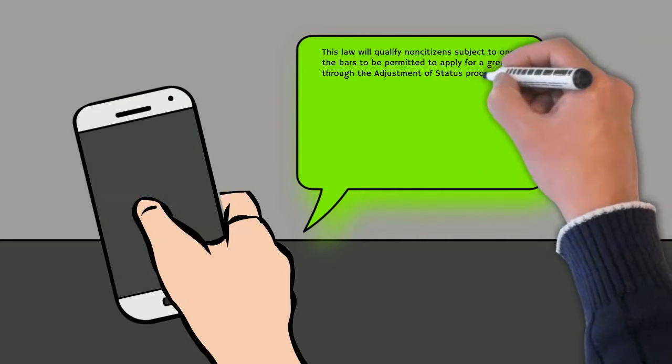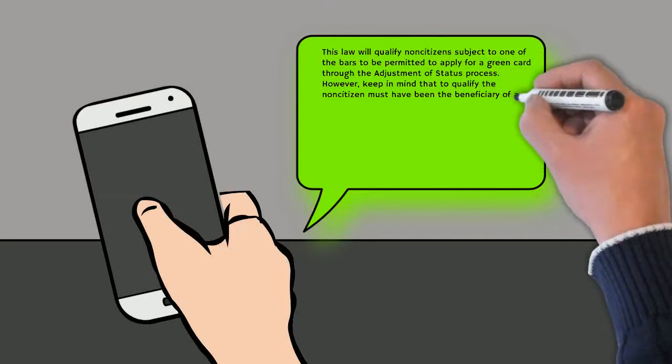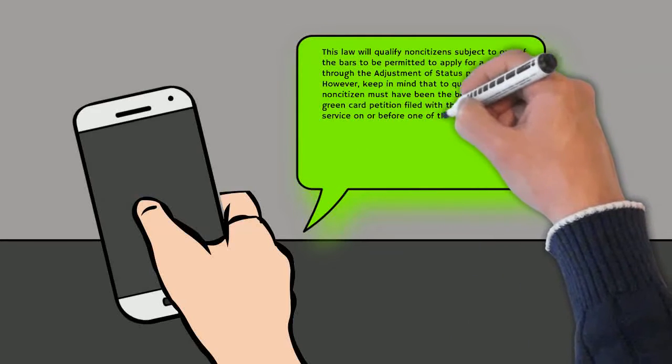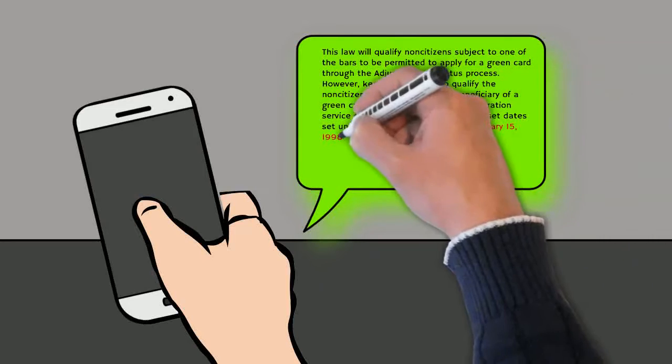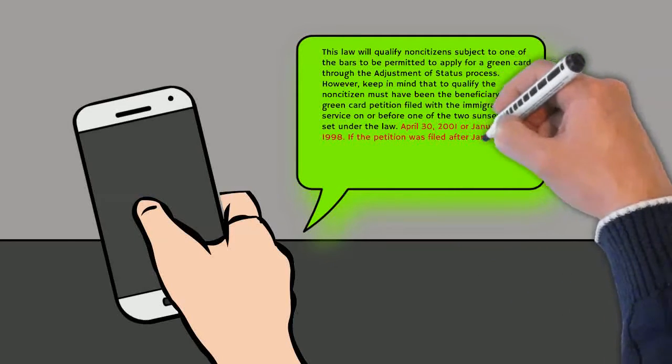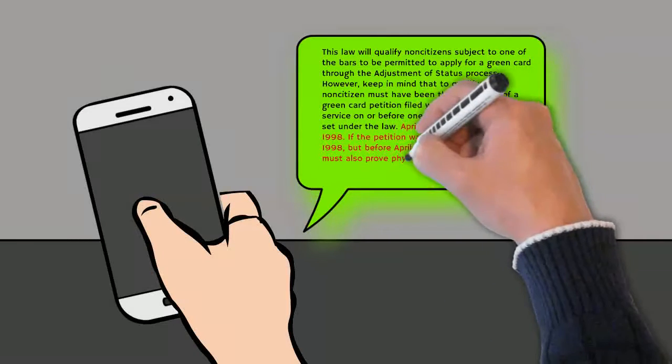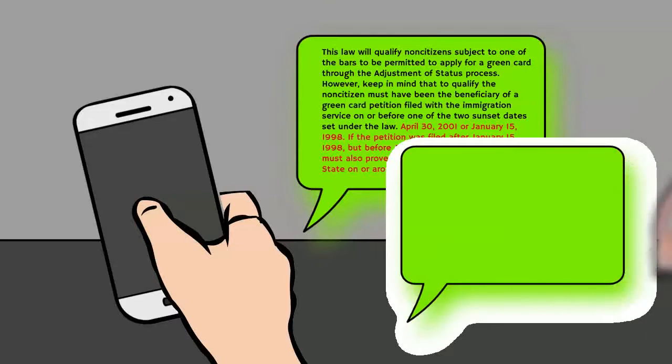Keep in mind that to qualify, the non-citizen must have been the beneficiary of a green card petition filed with the Immigration Service on or before one of the two sunset dates set under the law: April 30, 2001 or January 15, 1998. If the petition was filed after January 15, 1998 but before April 30, 2001, the beneficiary must also prove physical presence in the United States on or around December 21, 2000.